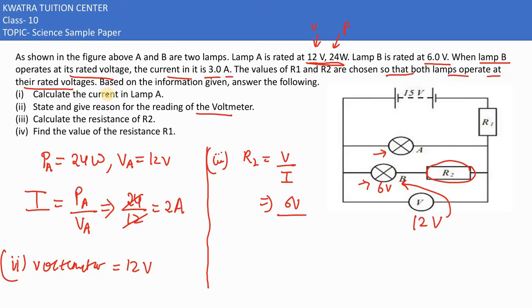I flowing is 3, so 6 volt over 3 ampere would give you 2 ohm.